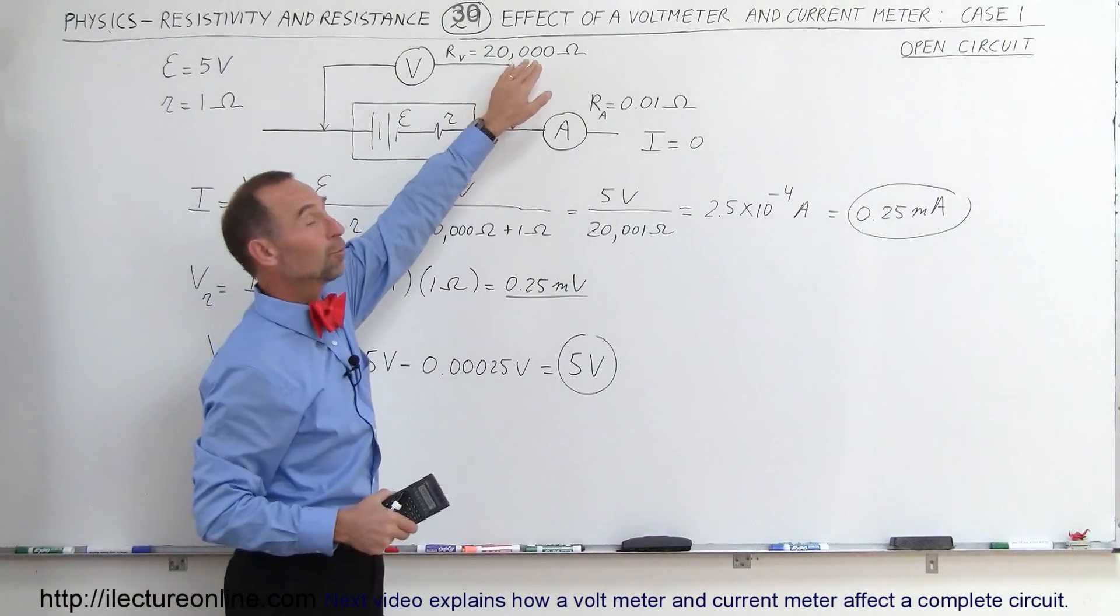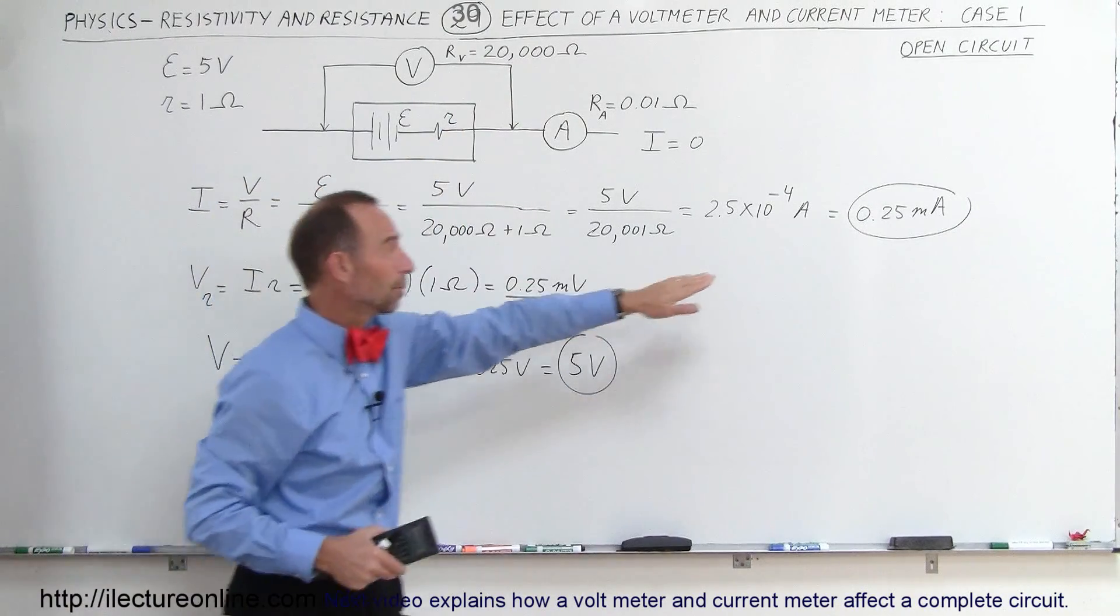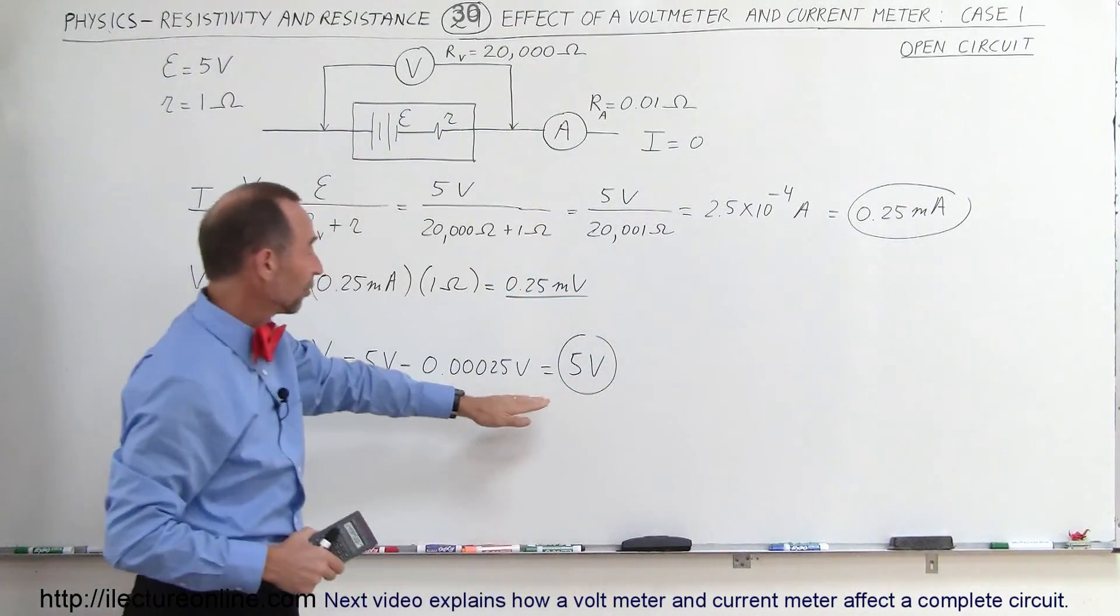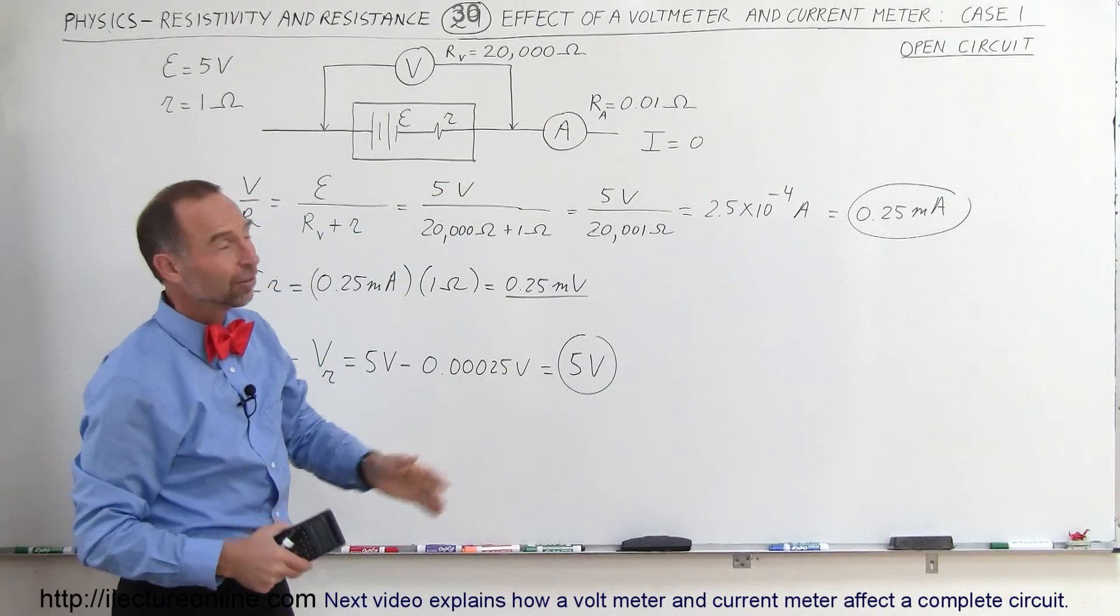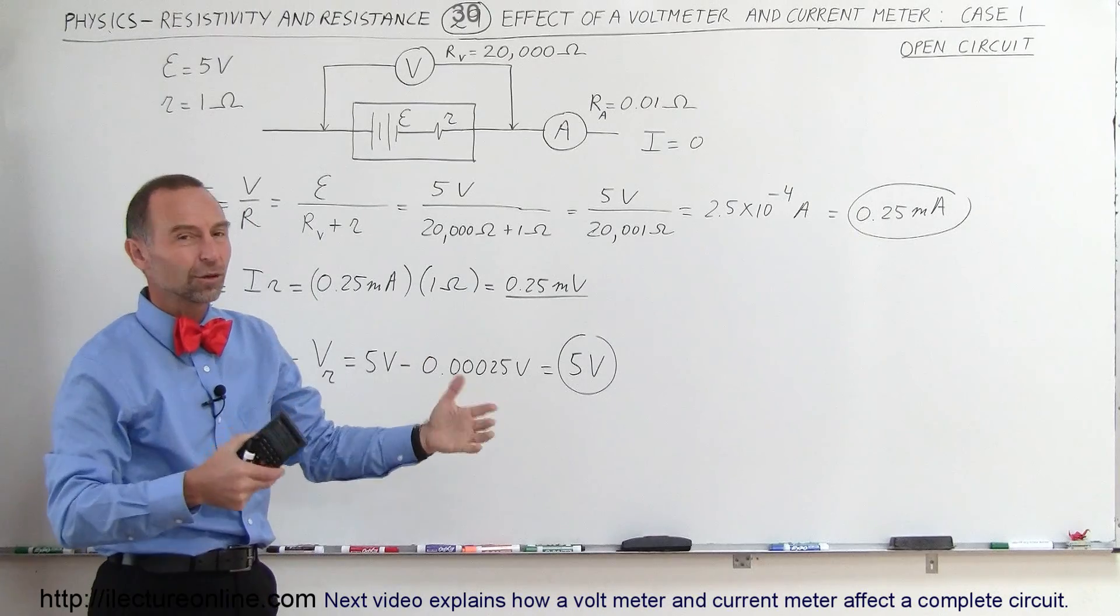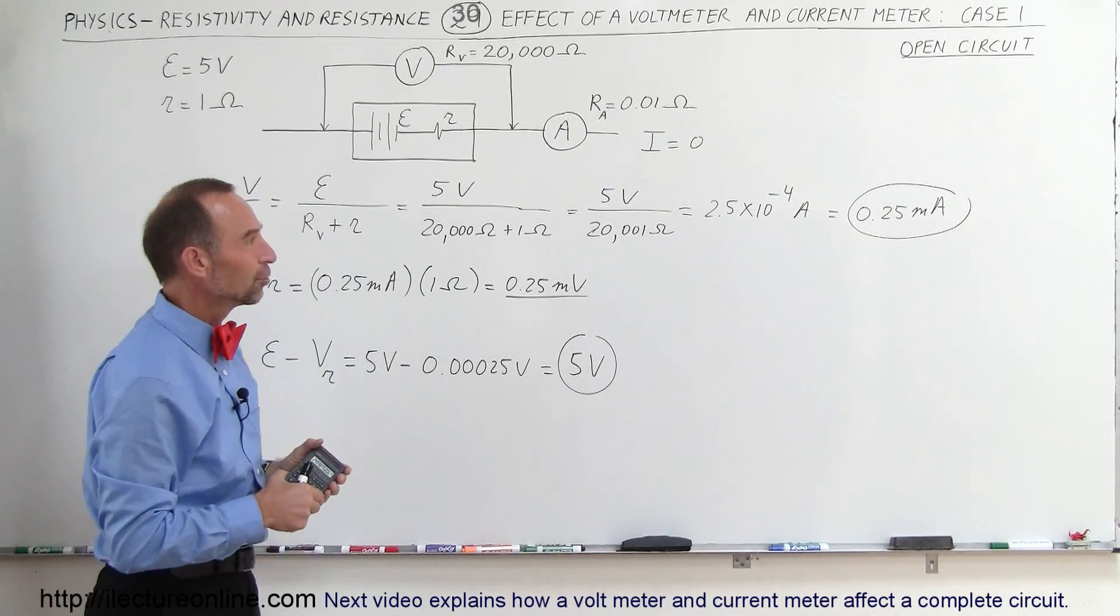Now notice, if this had been a much smaller value, then the current would have been more significant. And then you would have started seeing some voltage drop across internal resistance. Not in this case. So there is a simplistic case, an open circuit. That's what current meters and voltmeters do.